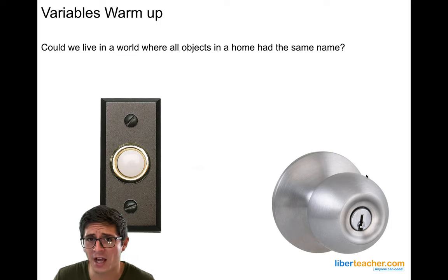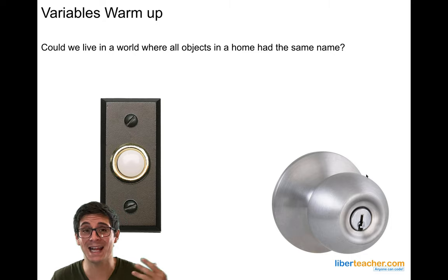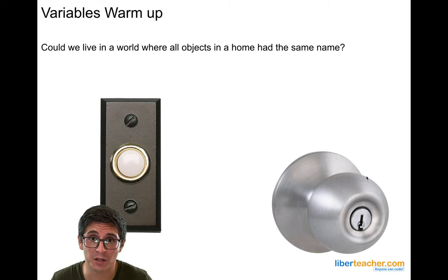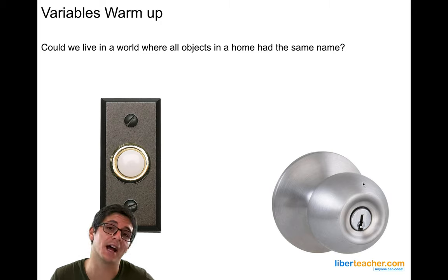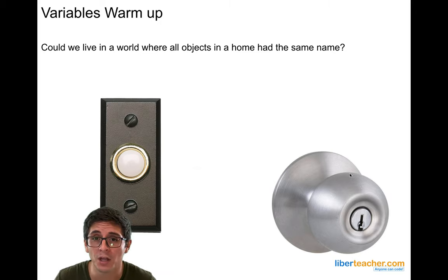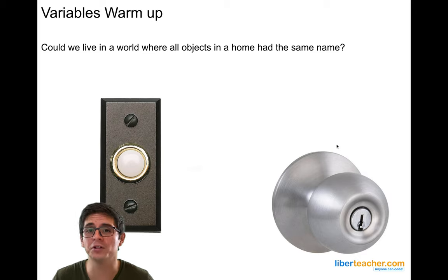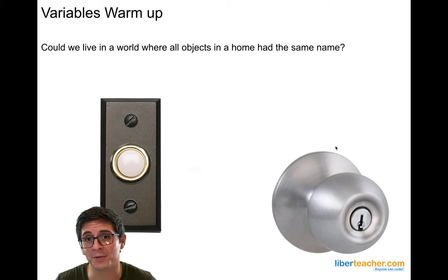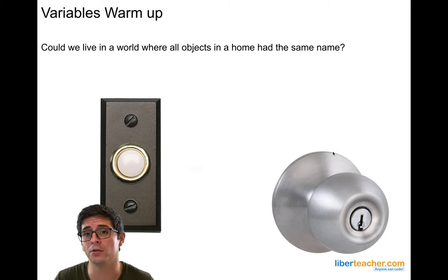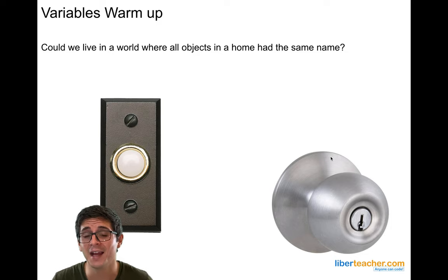So in computer science, we can name things so that we can tell certain things to move up or move down, to divide, to subtract — anything like that. To explore this further, I want you to see the two videos down below from code.org. They do a really great job of showing you how we use variables in computer science.